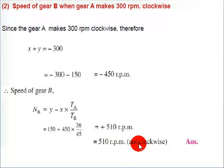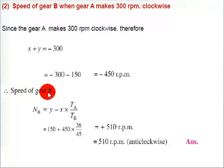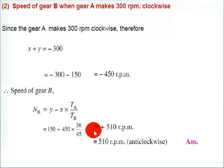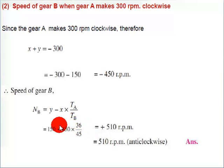The result is positive, which means it is anticlockwise. So in Case 2, the speed of gear B is 510 rpm in the anticlockwise direction. This is a simple gear train example that is also asked in GTO exams.